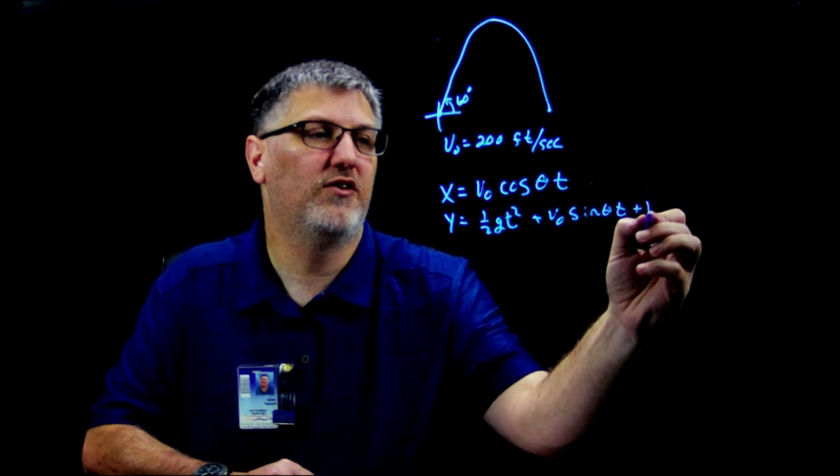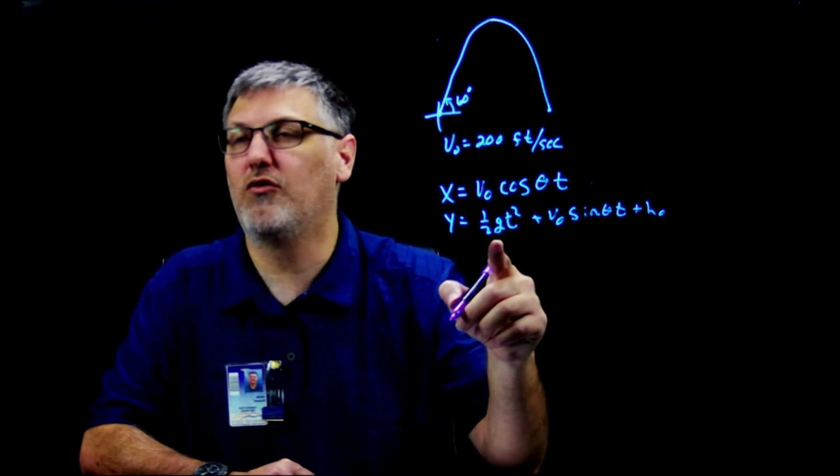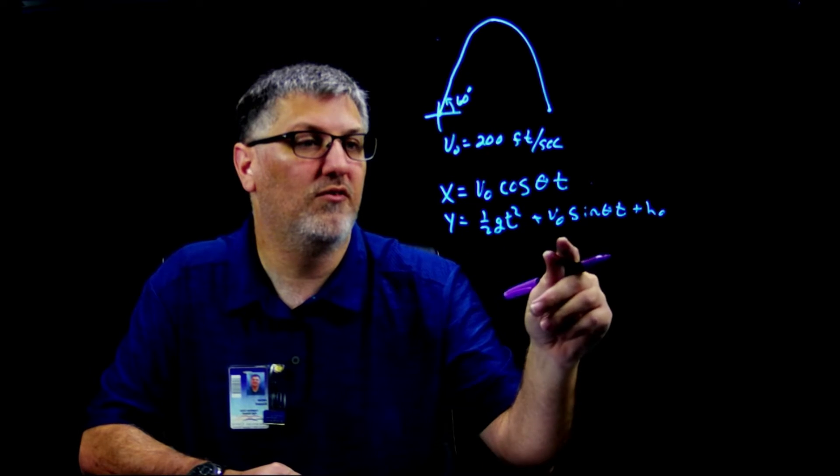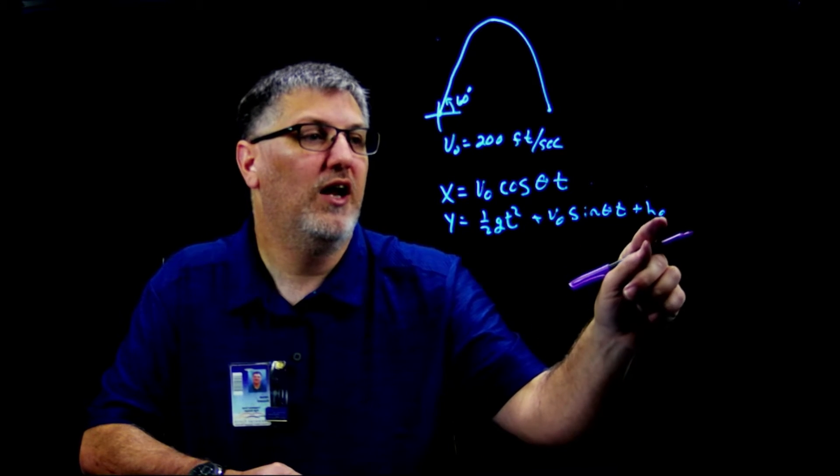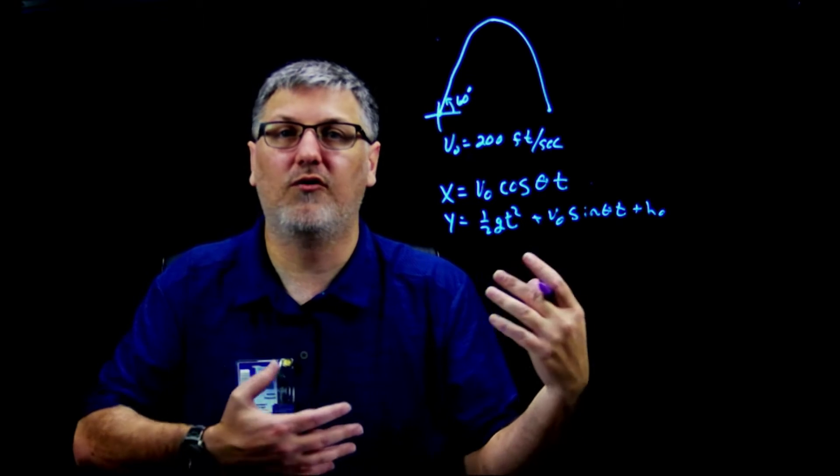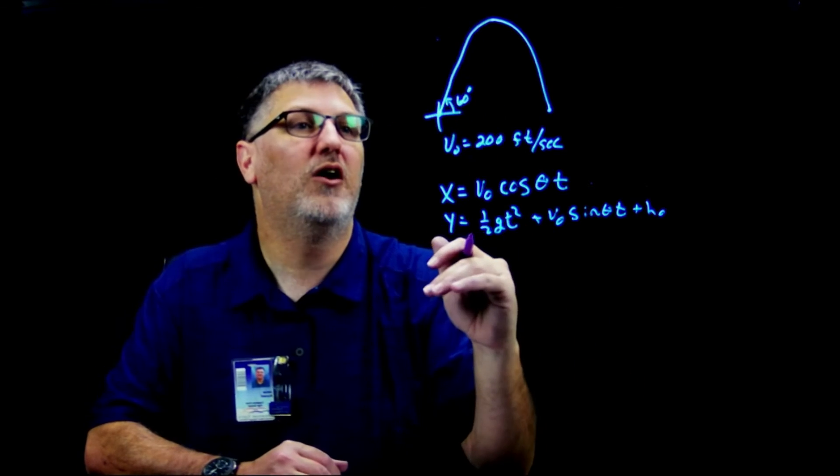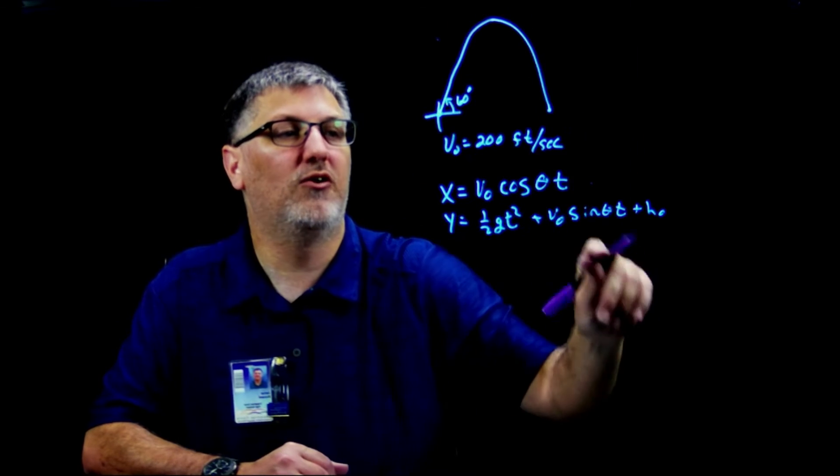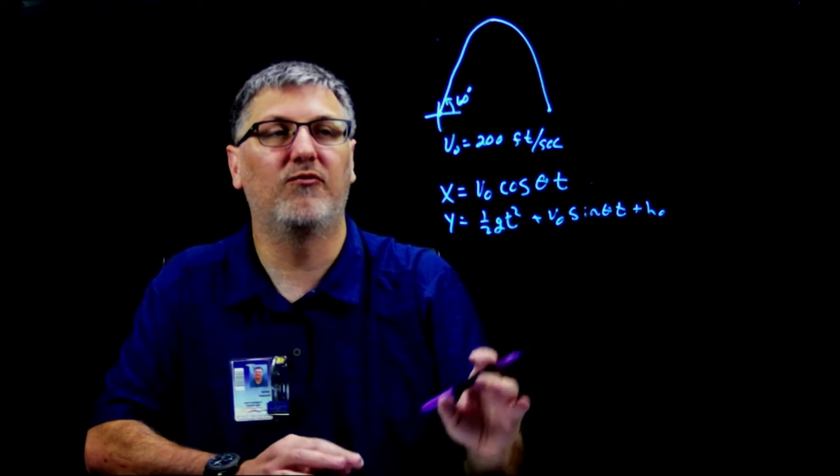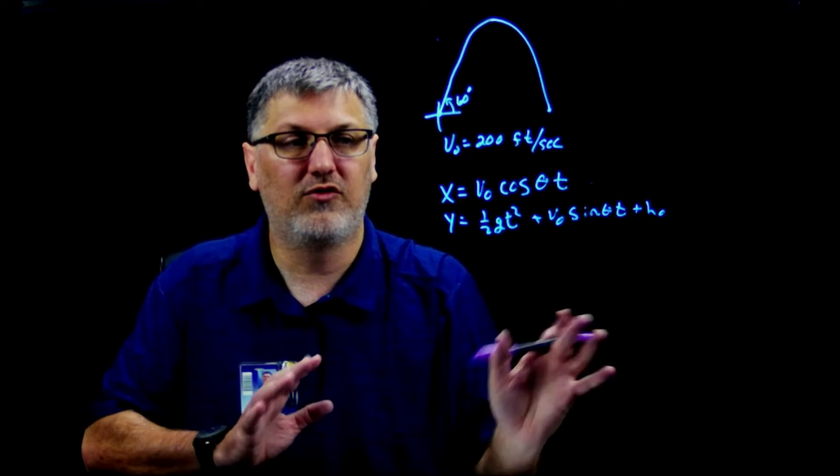Now g is gravity, of course that's going to be negative. v₀ I gave you, theta I gave you, and h₀ is your initial height. So if it's not zero you can actually account for if it's above or below, because if you're firing up a hill your initial height would be different than your landing point.